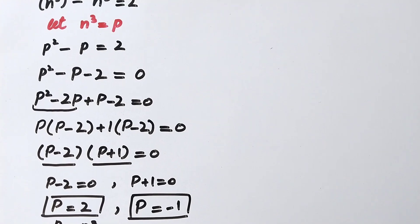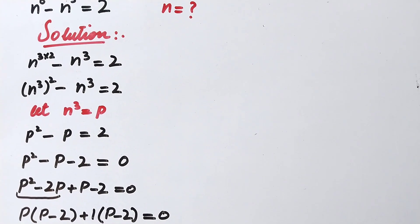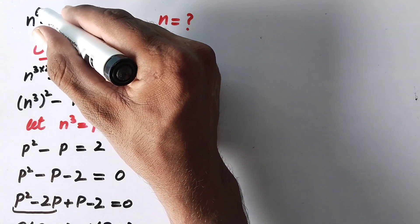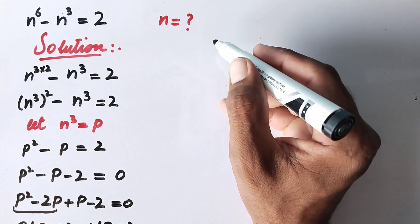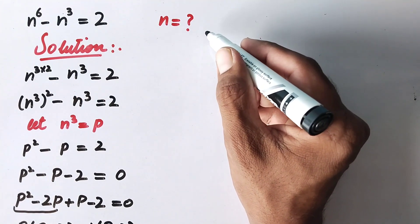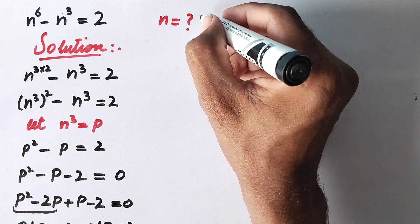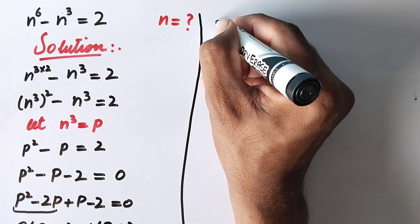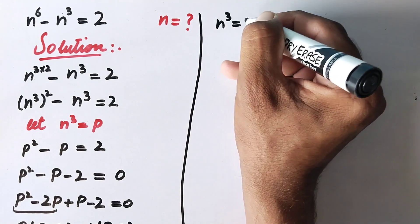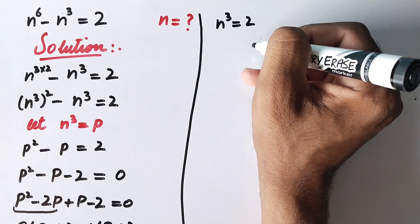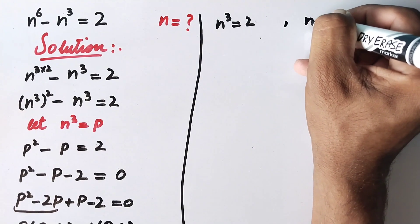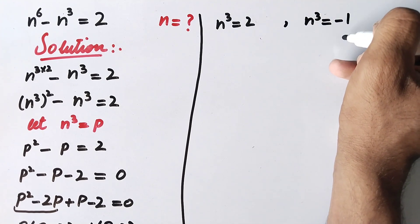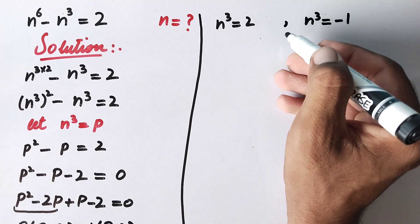However, our original equation is degree 6, so there must be 6 roots of n. Therefore we will find all possible roots by solving in another way. We write n cubed equals 2 and n cubed equals minus 1 as two separate cases.